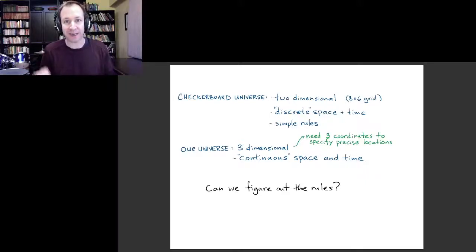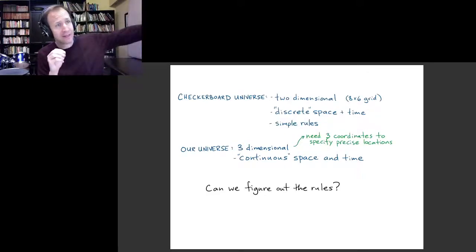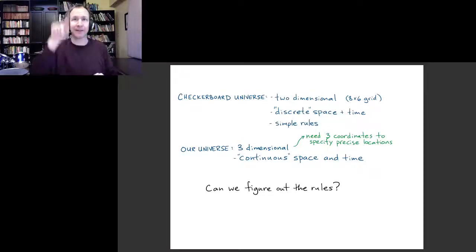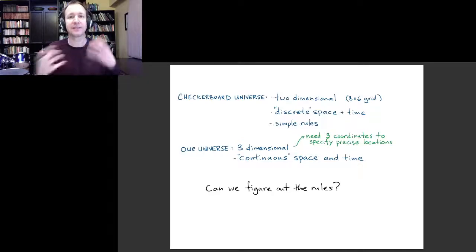If you wanted to specify the precise location of an object, say in this room, what you might do would be to say, how far is it from that wall, how far is it from that wall, and how far above the floor is it? Once you specify those three numbers, then you know exactly where the object is. That's the notion that our universe is three dimensional.